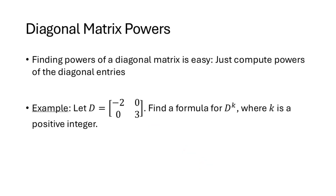Finding powers of diagonal matrices is easy — all we need to do is compute that power of each diagonal entry. For example, if D is the 2x2 diagonal matrix with entries -2, 0, 0, 3, let's find a formula for D to the K, where K is a positive integer.